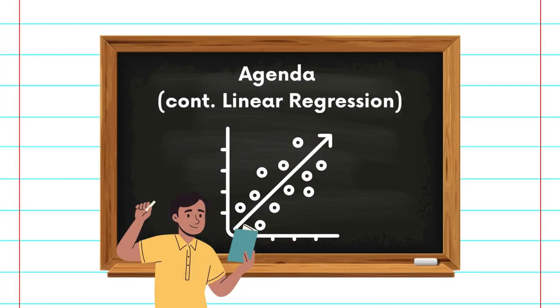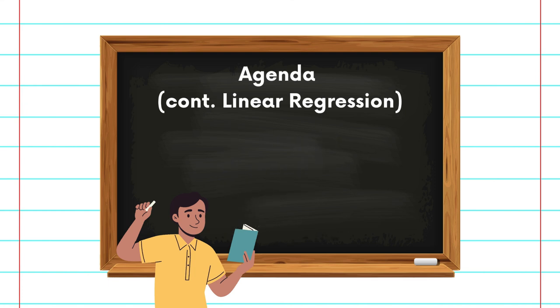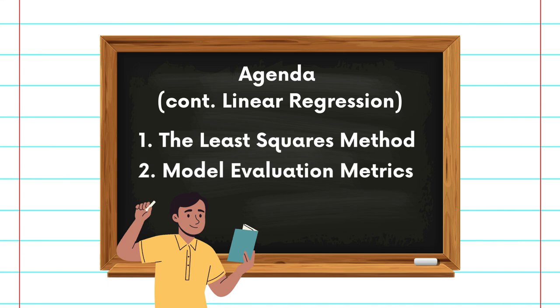This series will break down data science topics in simple terms that we can leverage throughout your data science study. Today we will continue to talk about linear regression, and we will cover two parts: the least squares method and the evaluation metrics for linear regression.